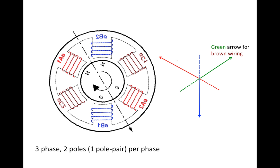Suppose the stator has six salient poles and we have three phases. Each phase is connected to two opposing poles — one pole pair per phase. So with three pole pairs, each pole pair is connected to one separate phase.